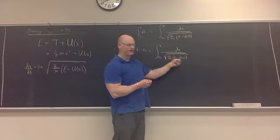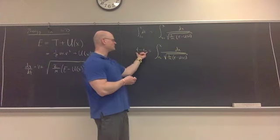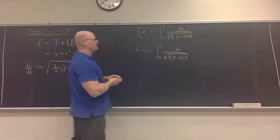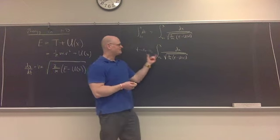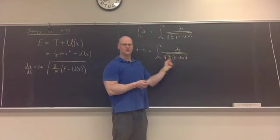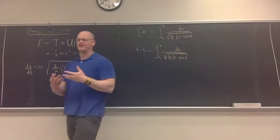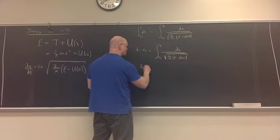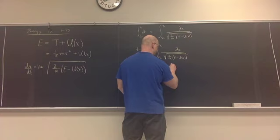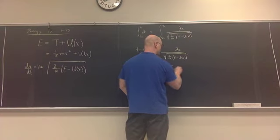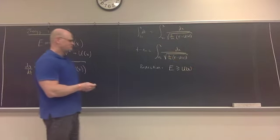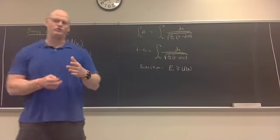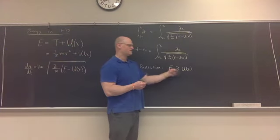Over here, this is now putting a restriction on us, saying that since time has to be real, what must be true then is that the energy must always be at least greater than or equal to the potential energy to make this thing real. If the potential was greater than the energy, the square root here would become negative, we'd end up with the square root of a negative number — an imaginary number — which would give us an imaginary time, which is not possible. So the restriction is: energy must always be greater than or equal to the potential energy.